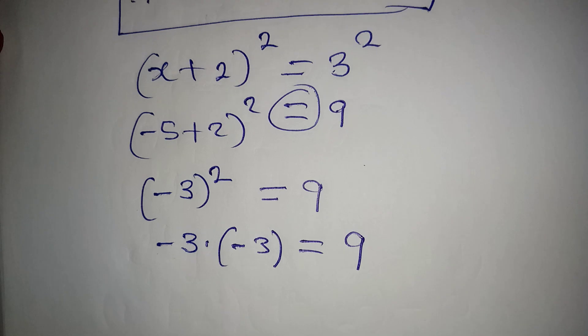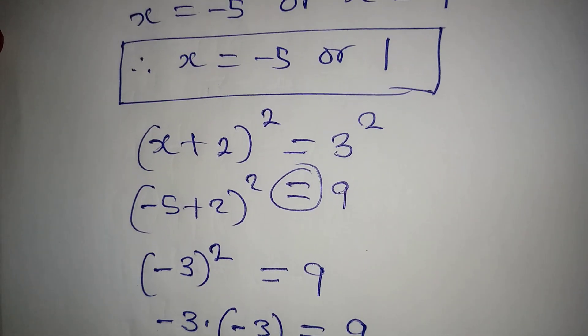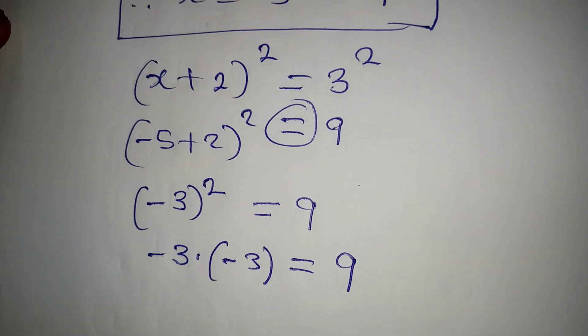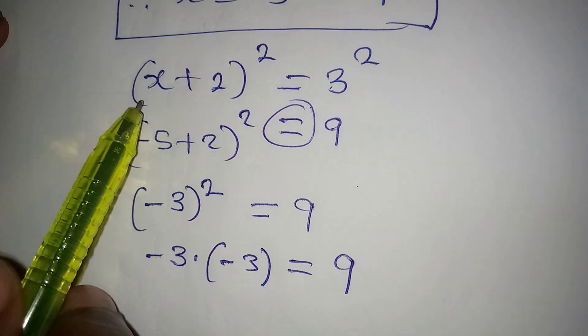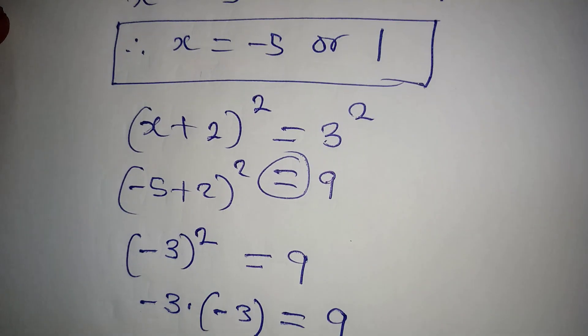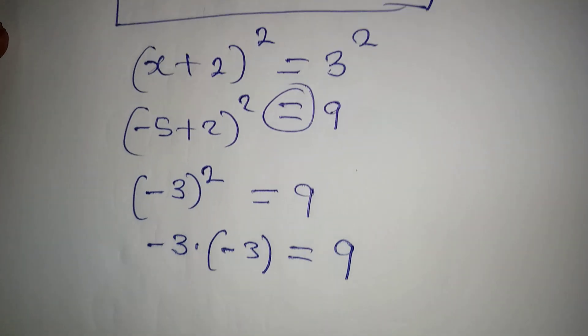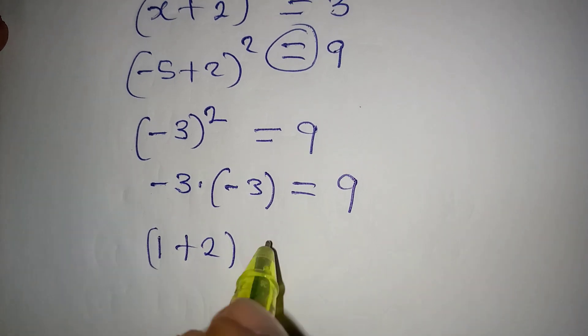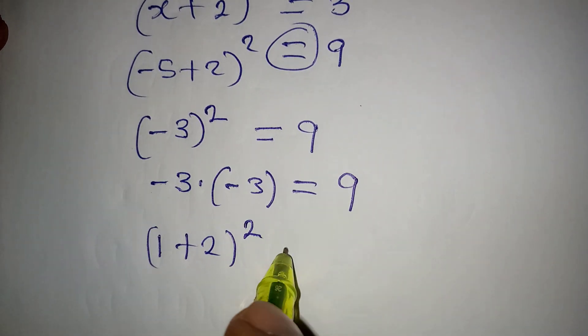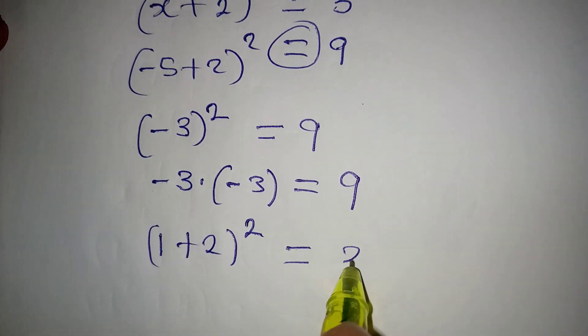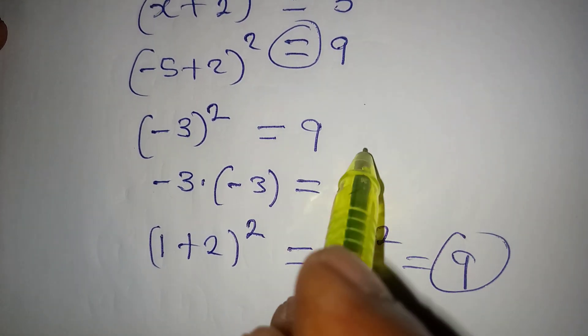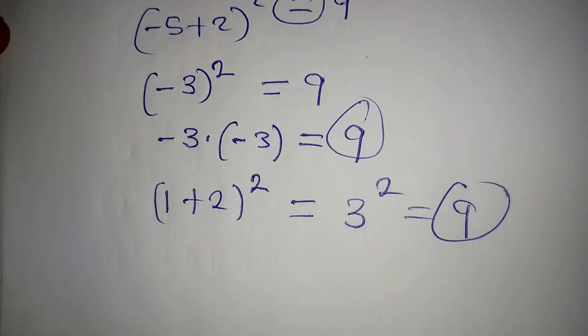So our value of x, which is minus 5, is correct. Now let's put in 1. If we put in 1 as x, just as we had over there, we are going to have 1 plus 2 to the power of 2. And definitely, this is giving us 3 to the power of 2, which is 9. So this means that both of them are satisfying the equation.